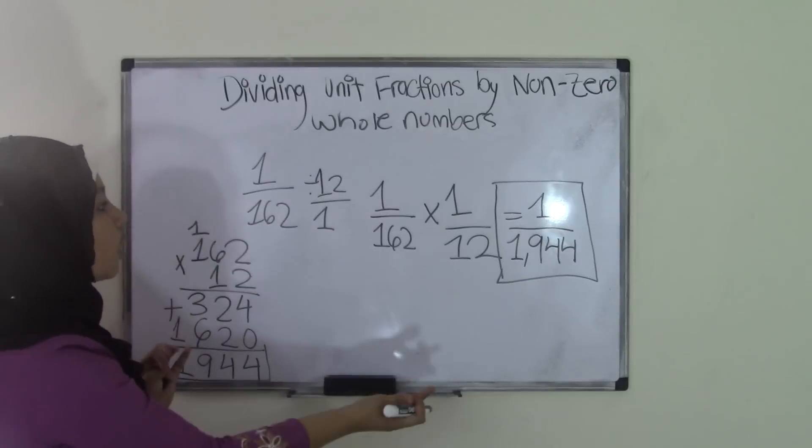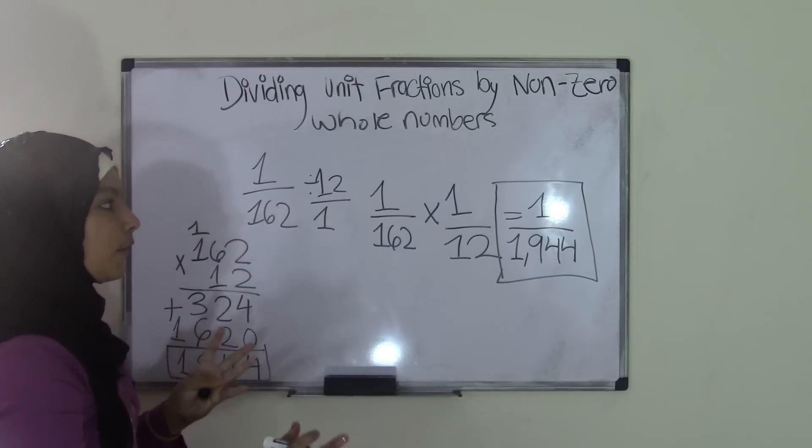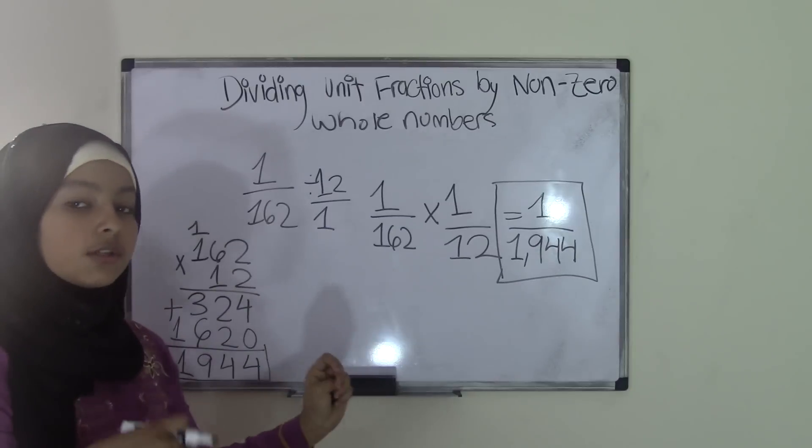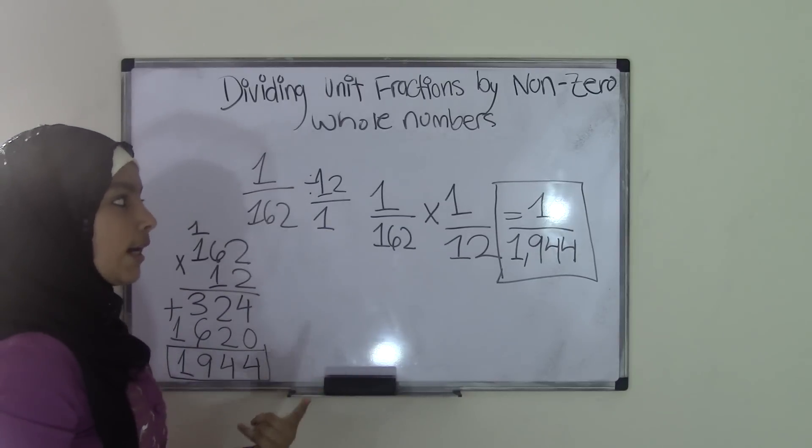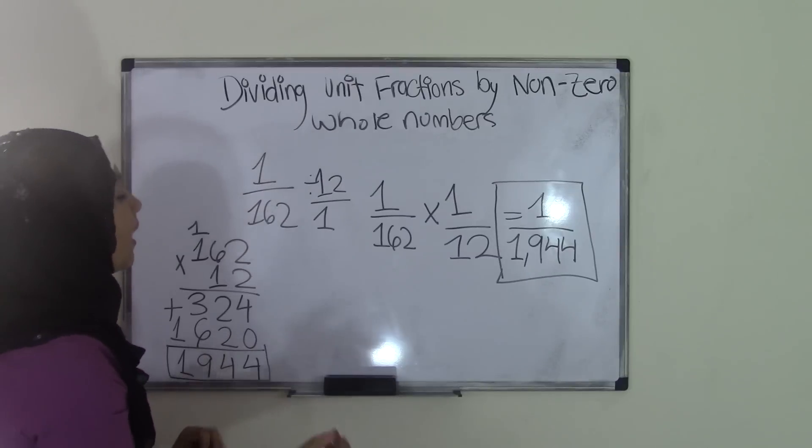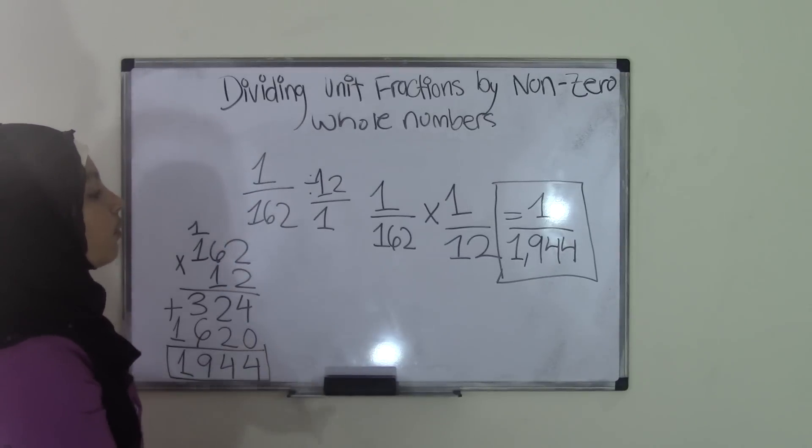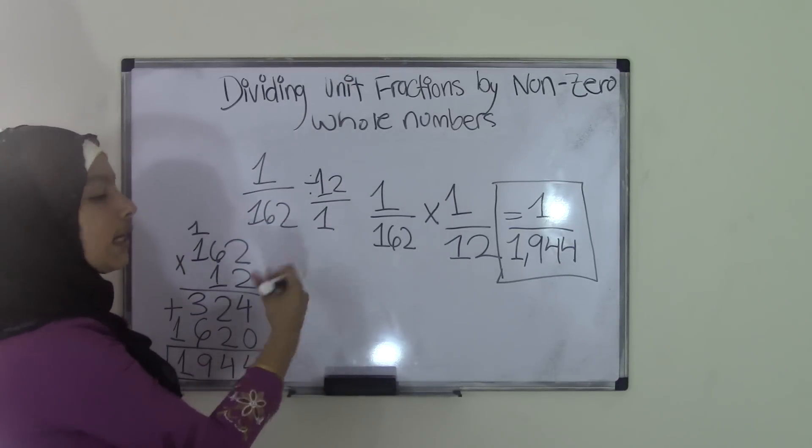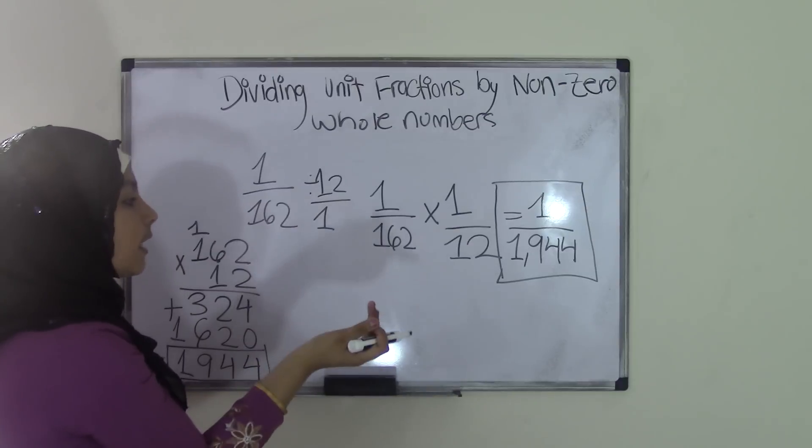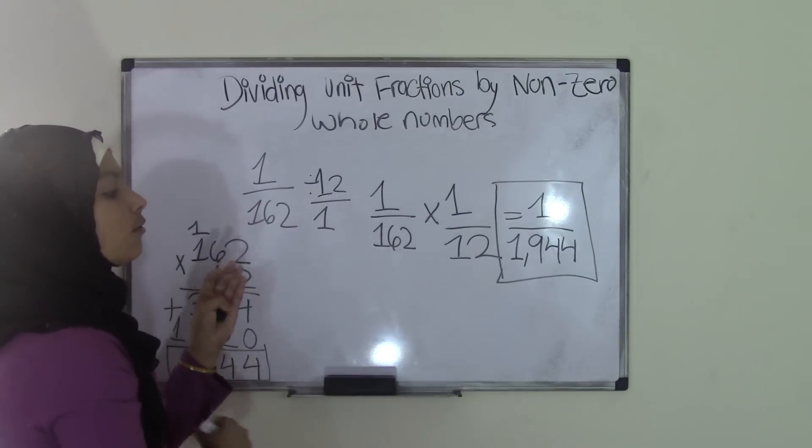So just to summarize this topic, the method for dividing a unit fraction by a non-zero whole number is that remember, unit fractions, the numerator is always a 1. The non-zero whole numbers are just whole numbers without zeros in them. And first you need to, for your whole number, you need to add the 1 as your denominator, then make it into a reciprocal. So you're going to change the division sign into a multiplication sign, switch the second fraction upside down, then just do direct multiplication.